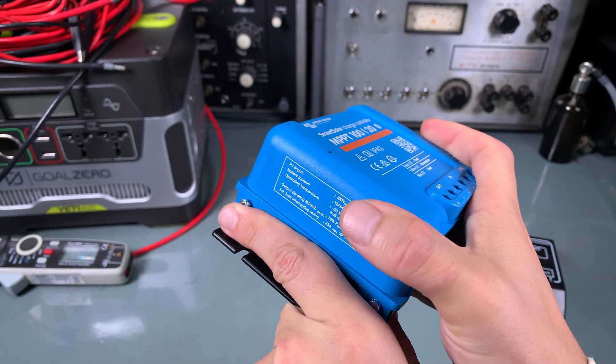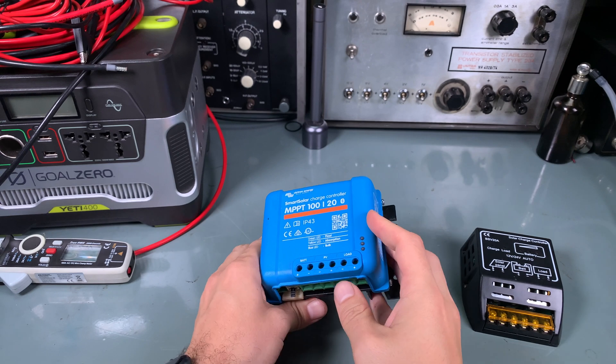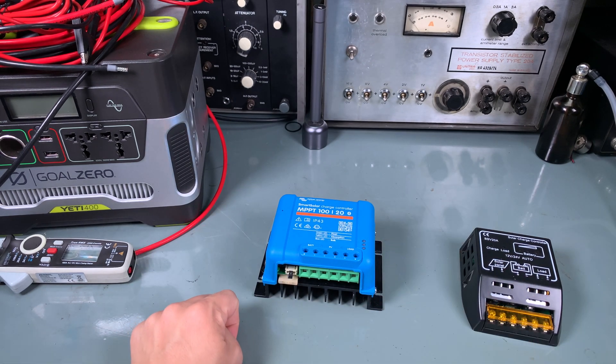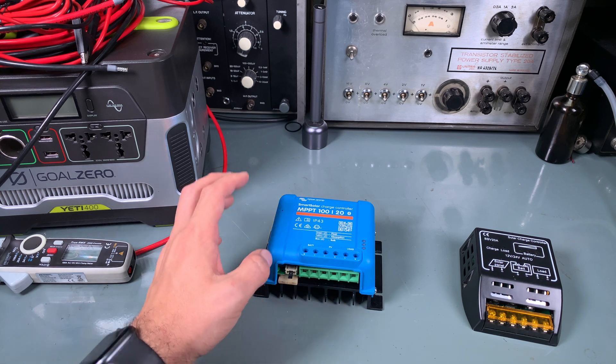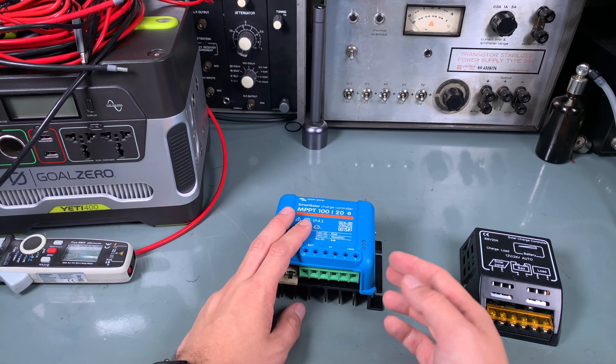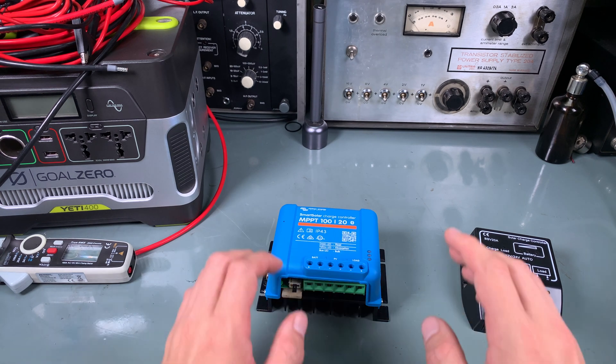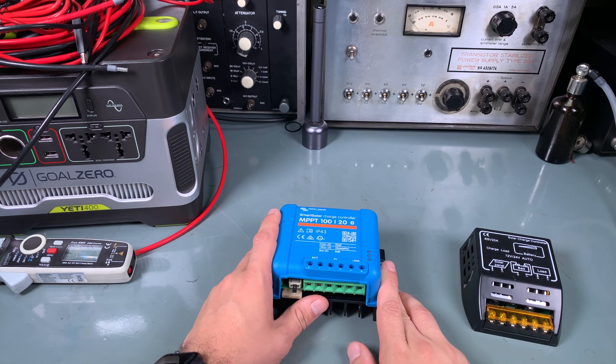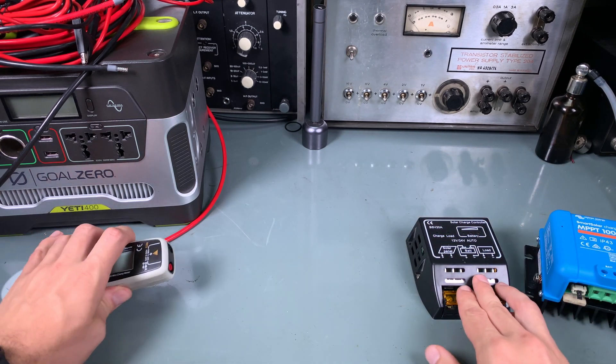And that model is capable of working with 100 volt so we can shine multiple panels together we can have a smaller cross section of wires but at the output we can get like 20 amp. There was a saying that seeing is believing so let me do a small scientific experiment.